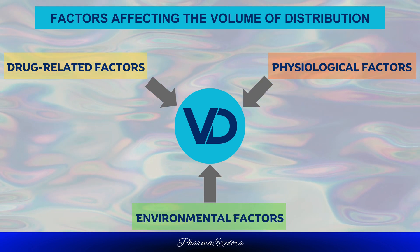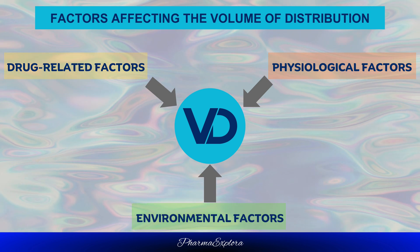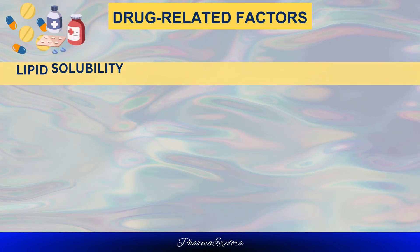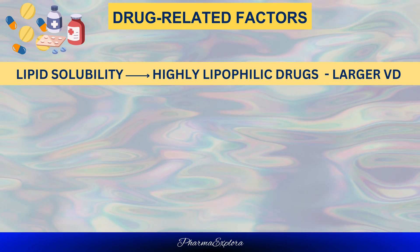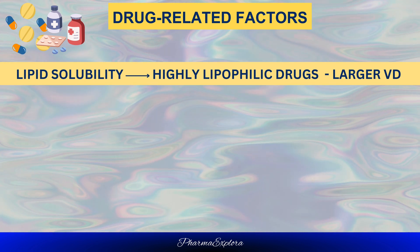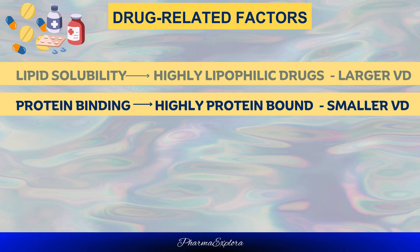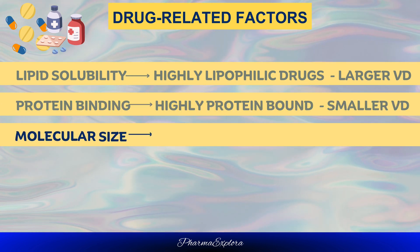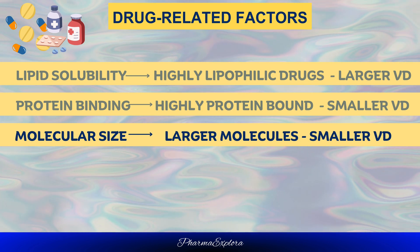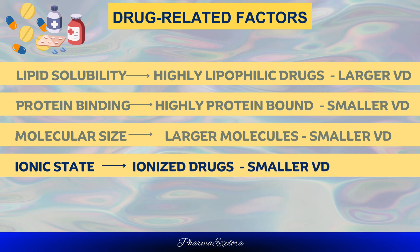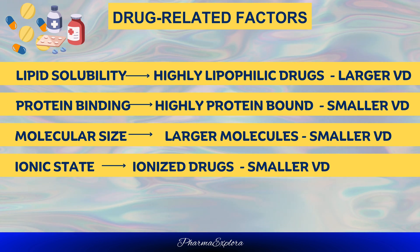Multiple factors can influence the volume of distribution, categorized into drug-related, physiological, and environmental factors. Drug-related factors include: (1) Lipid solubility — highly lipophilic drugs tend to have a larger volume of distribution as they can penetrate cell membranes and distribute into fatty tissues like adipose tissue; (2) Protein binding — extensively protein-bound drugs have a smaller Vd as they are confined to the vascular compartment; (3) Molecular size — larger molecules have smaller Vd due to difficulty crossing membranes; and (4) Ionic state — ionized drugs are less permeable through cell membranes and have a smaller Vd than their non-ionized counterparts.